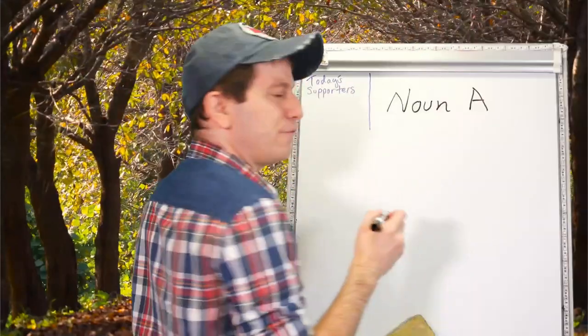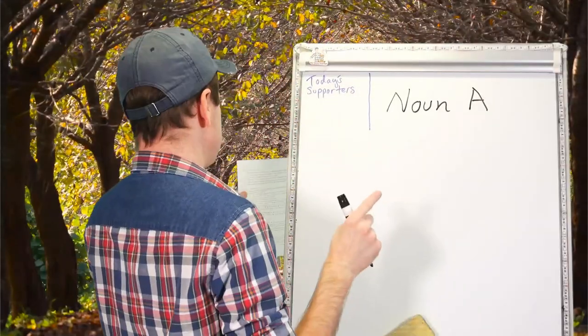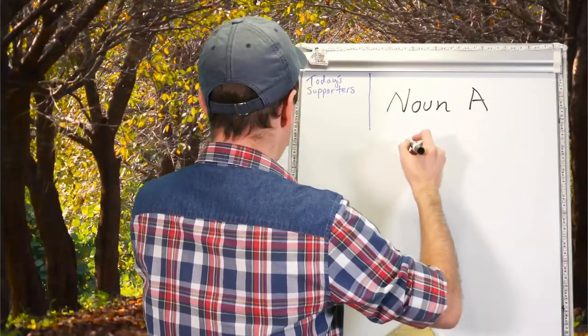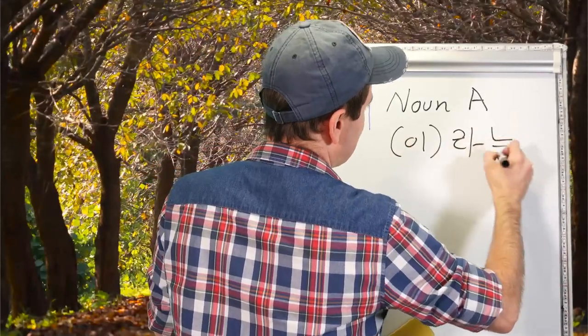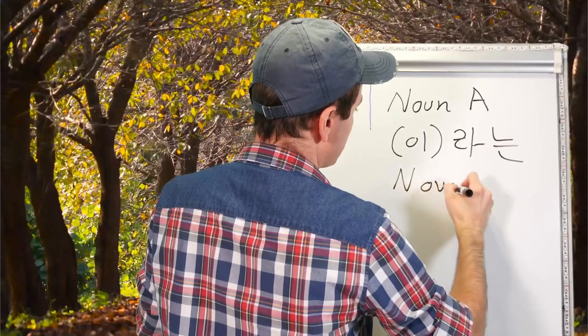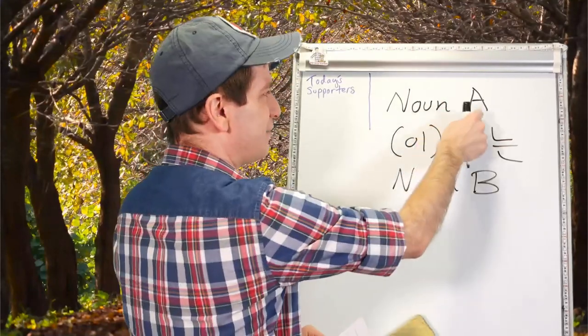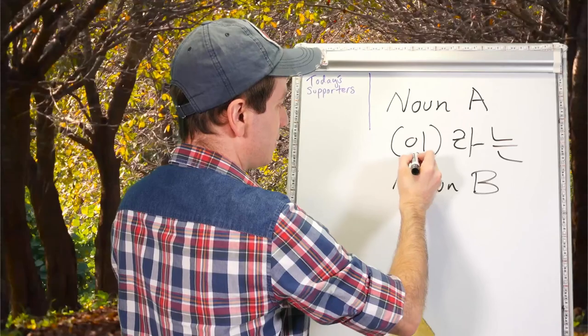Hey everyone! The form we're going to be using requires at least two nouns. You take a noun and attach 이라는, and then attach the other noun. This E is only added if the noun ends with a consonant.